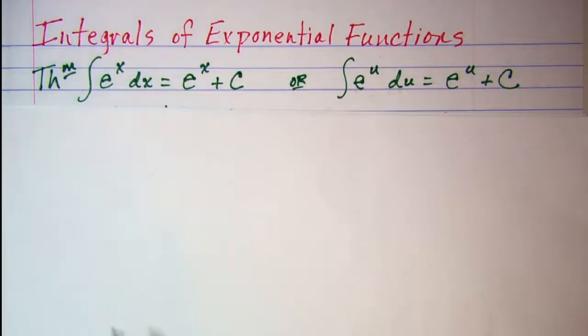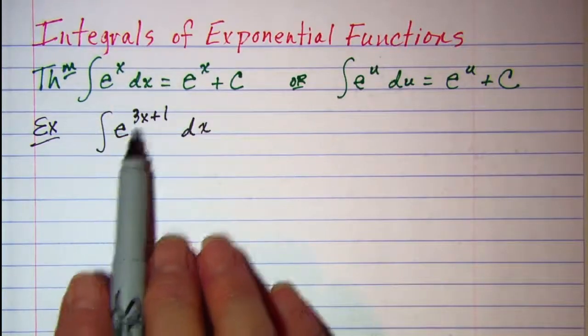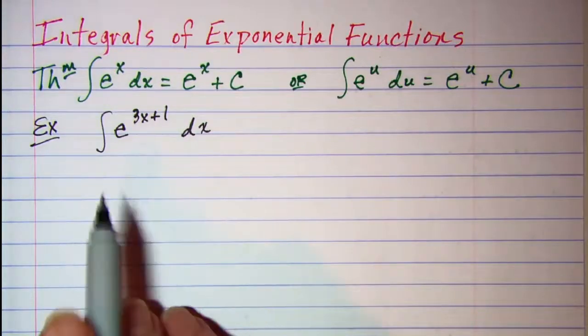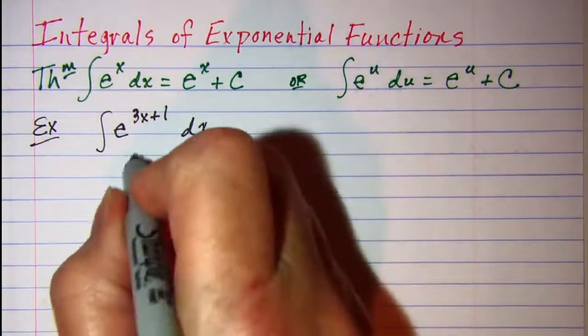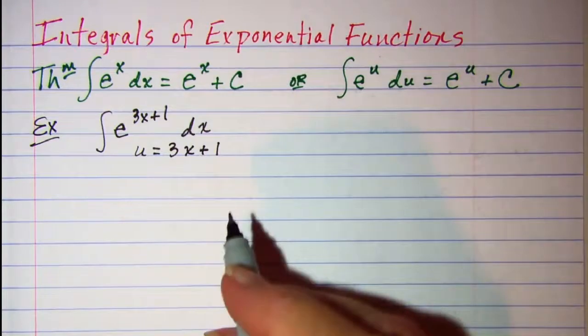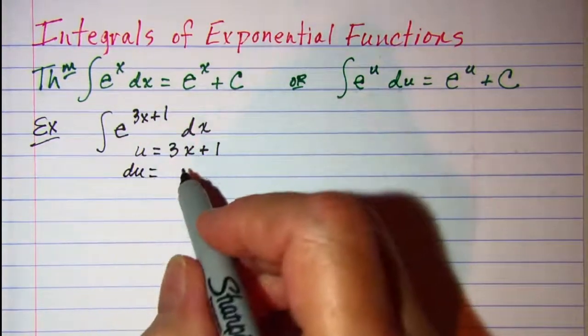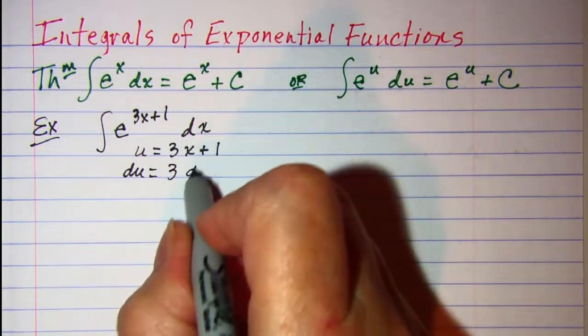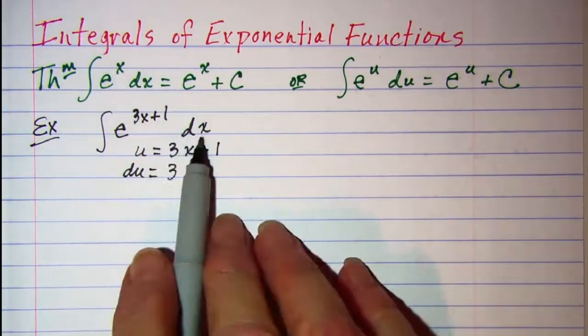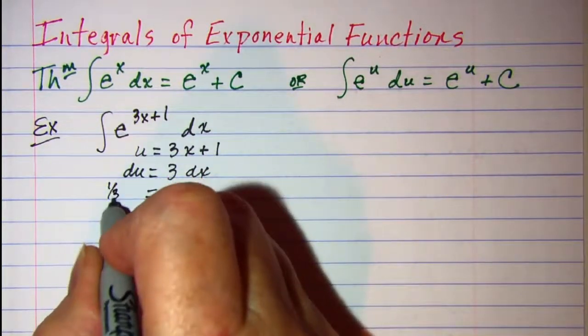Our first example: we have the integral of e to the 3x plus 1 dx. Now we'll need to let u be 3x plus 1, and then du will be 3 dx. So we'll be substituting then, so dx is 1 third du.